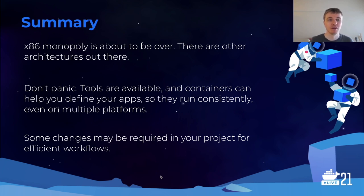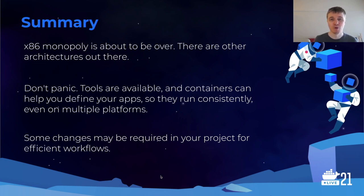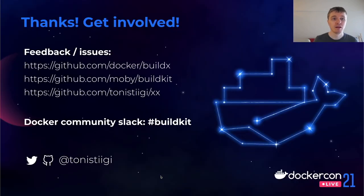As a summary: the monopoly of x86 is about to be over and there are other architectures out there, but there's no need to panic. The tools are available — you can still build container images and run them, and containers provide a nice layer of consistency when moving between platforms. Some changes may be required in your project, but they're quite easy to make, as long as you keep in mind that once your application leaves your PC, it may run on another platform. Please check out the repositories, provide feedback, and report any issues there. If you want to interact with the maintainers more directly, there's a BuildKit Slack channel in the Docker community Slack.